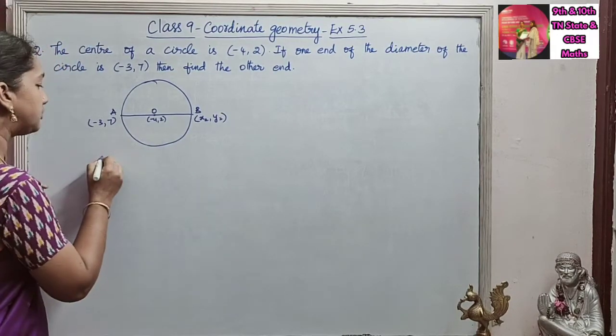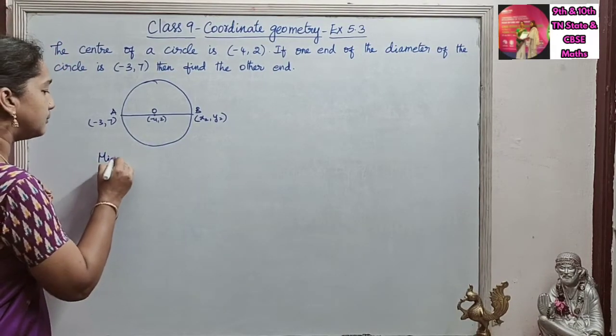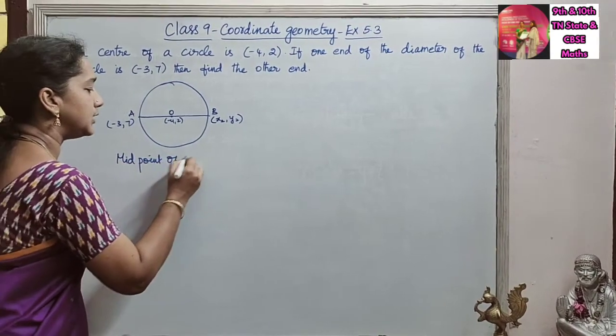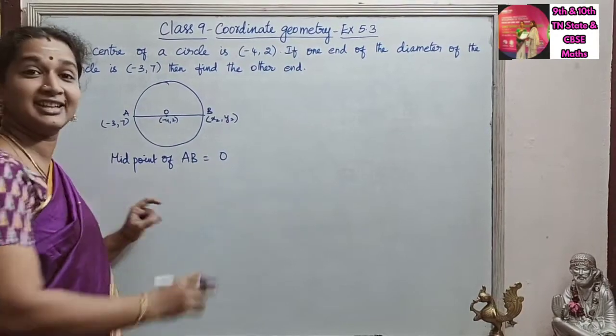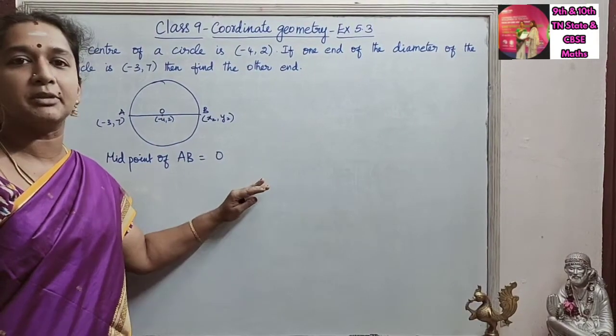So midpoint of AB, midpoint of AB is equal to O. O is the midpoint. So midpoint of AB is equal to O.